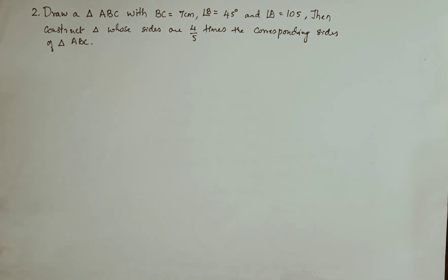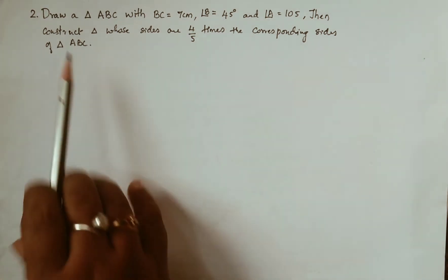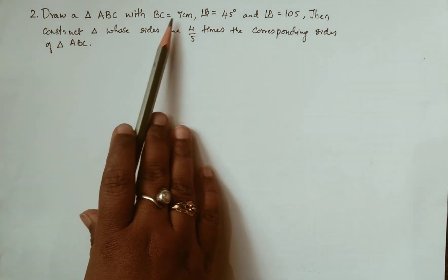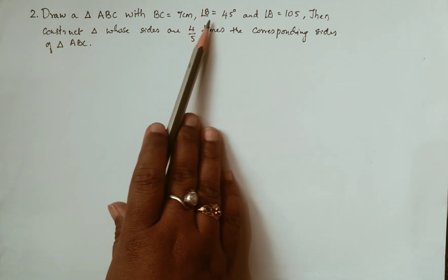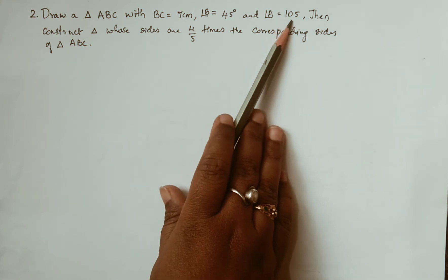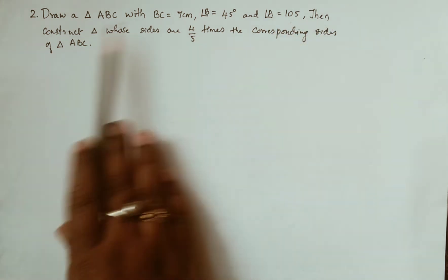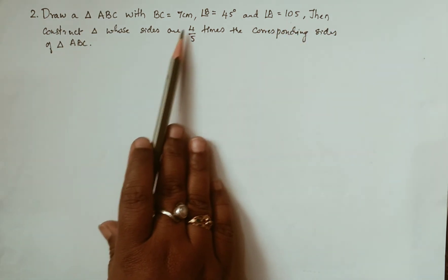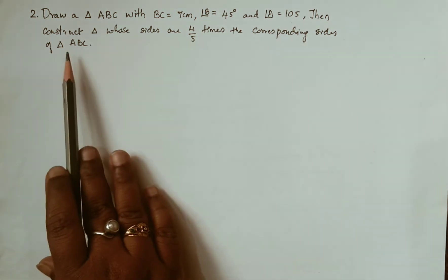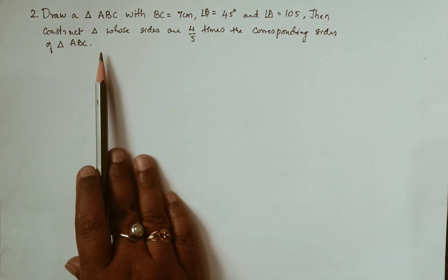Hello children, welcome back to my channel. Today we are going to see the second question related to Class 10 construction: draw a triangle ABC with BC equal to 7 centimeter, angle B equals 45°, and angle A equal to 105°, then construct a triangle whose sides are 4/5 times the corresponding sides of triangle ABC.